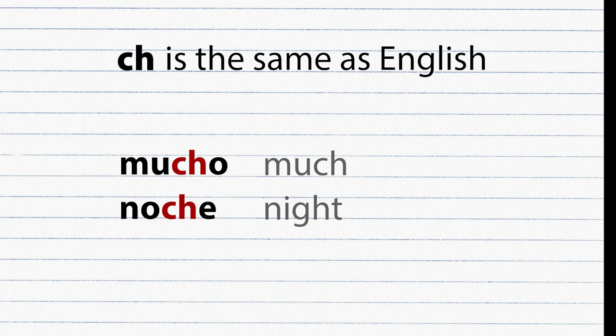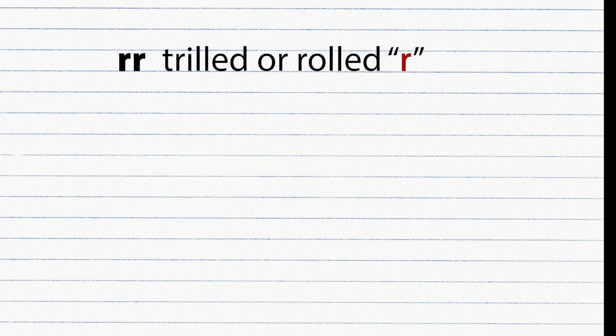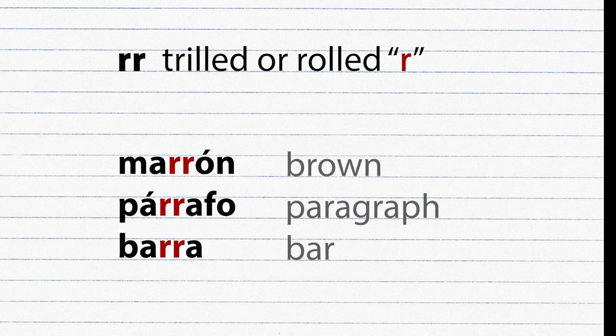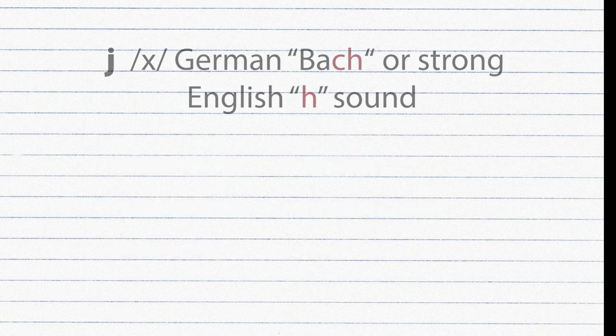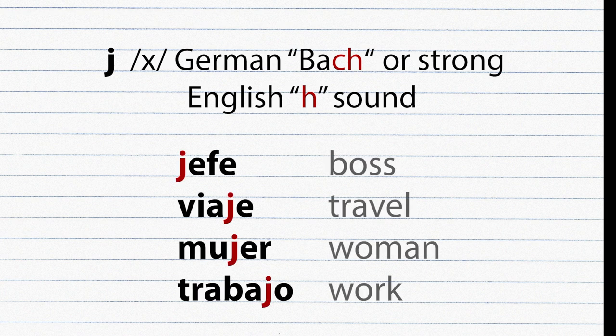Ch is the same as in English — example: Mucho, Noche. The double R has a thrilled or rolled R sound — examples: Marrón, Párrafo, Barra. The letter J is pronounced like German 'Bach' or similar to a strong English H sound — examples: Jefe, Viaje, Mujer, Trabajo.